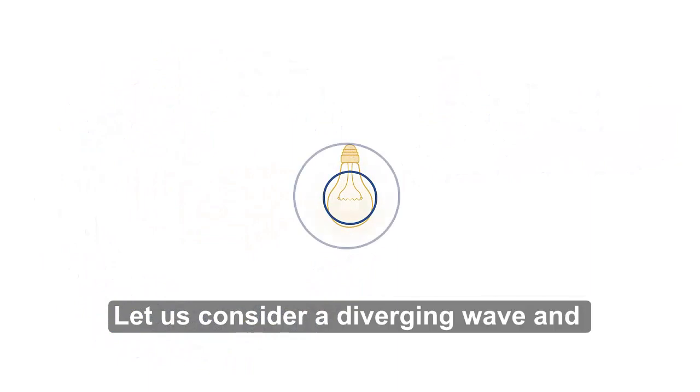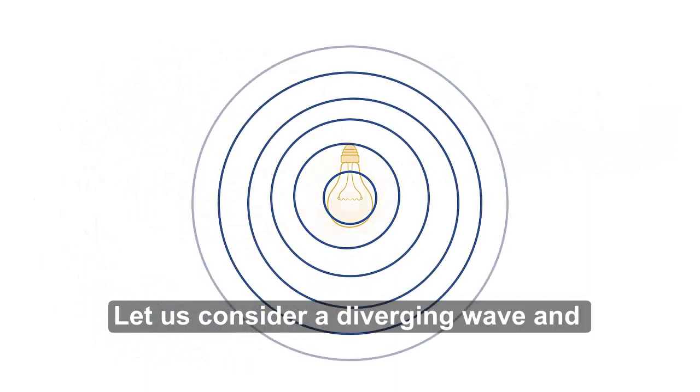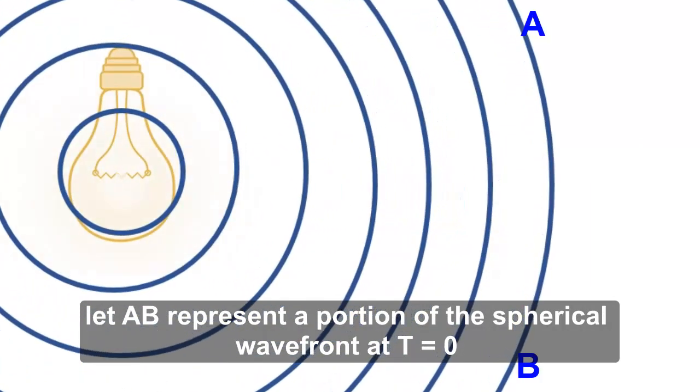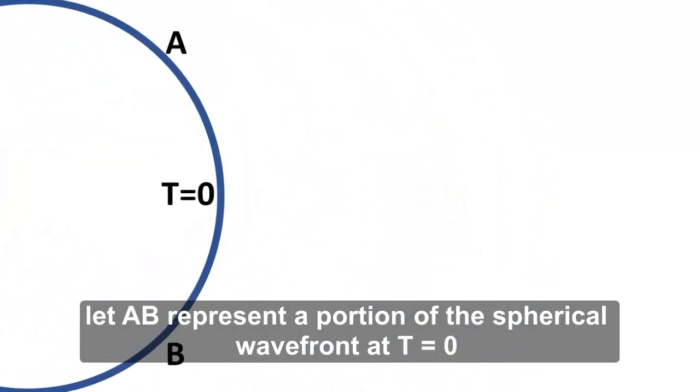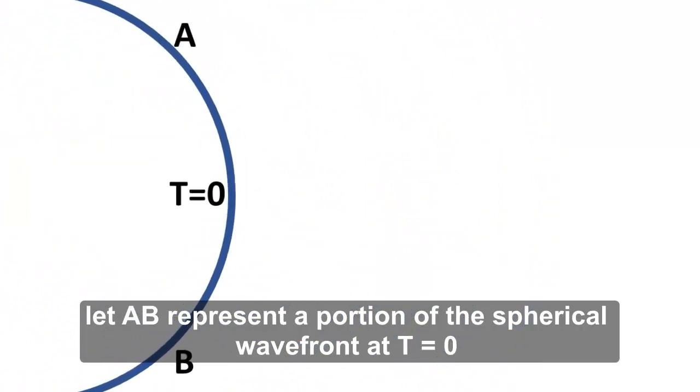Let us consider a diverging wave and let AB represent a portion of the spherical wavefront at t equals zero.